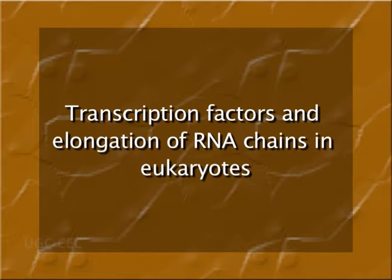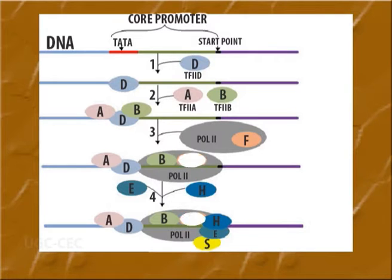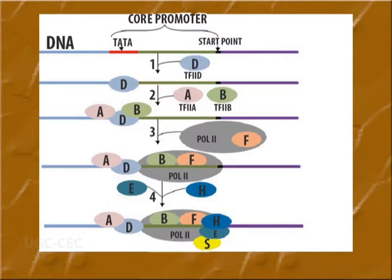Certain accessory proteins of transcription called elongation factors enhance the overall activity of RNA polymerase II, leading to an increase in elongation rate. At least two such proteins are known. Number one, transcription factor TF2F accelerates RNA chain growth relatively uniformly in concert with RNA polymerase II. During RNA elongation, transcription factor TF2F remains attached to RNA polymerase while all other transcription factors have dissociated from the pre-initiation complex (PIC).